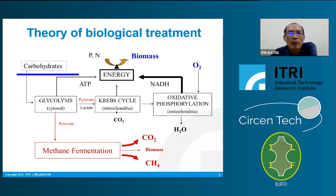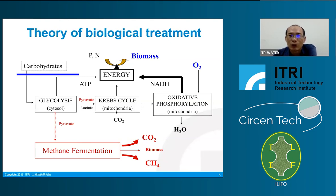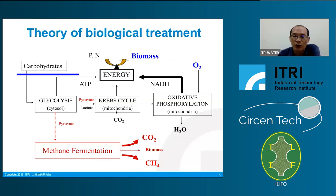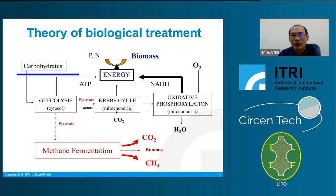Microorganisms get energy from substrates like organics, then grow and produce biomass. Organics in wastewater are converted to biomass and carbon dioxide, water, and methane. Organics transfer to solid form as biomass, and some transfer to gas form as carbon dioxide and methane.